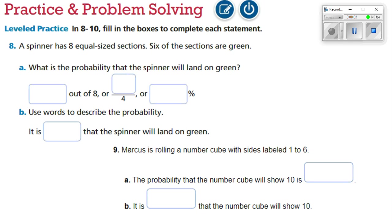All right, good evening everybody. Today we're going to be doing the homework lesson for 7-1, likelihood and probability. We're going to start with the practice of problem-solving course on number eight.